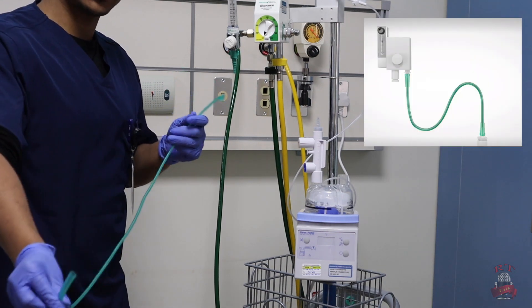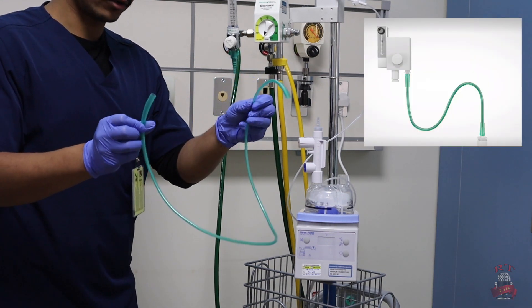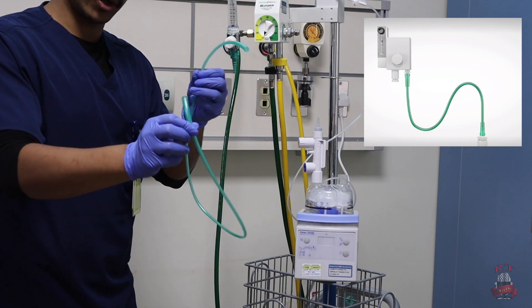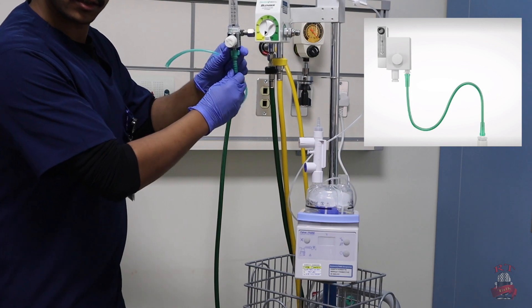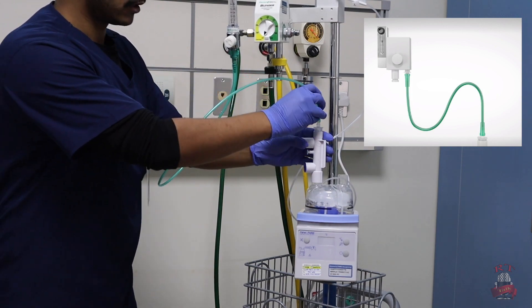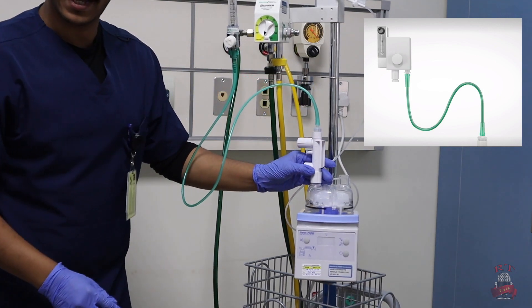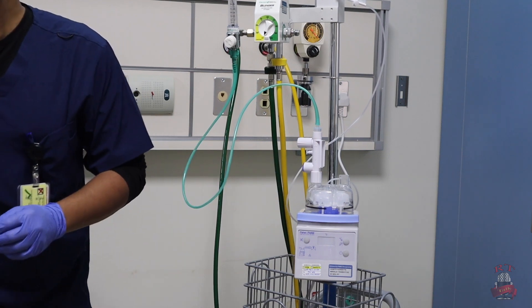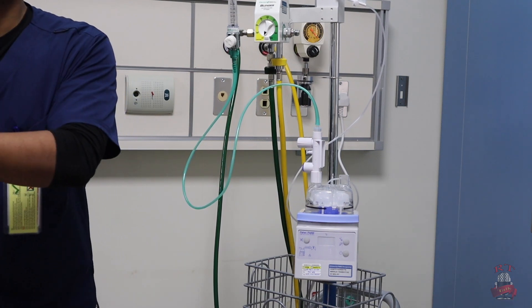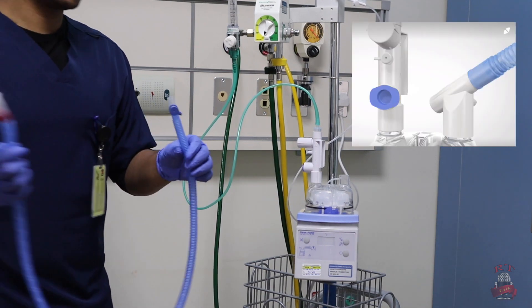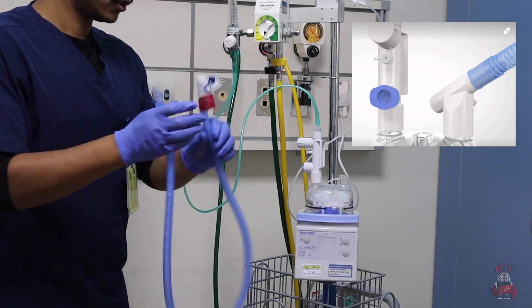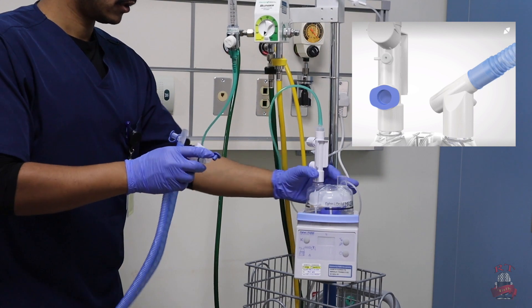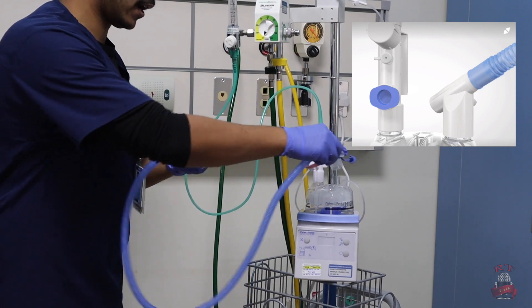After that, you will take one meter oxygen tube or green oxygen tube. It's enough, one meter. You will connect it between your flow meter and your pressure release valve. After that, you will take now your inspiratory limb, the blue one. Then you will connect it on the other side of the humidifier.